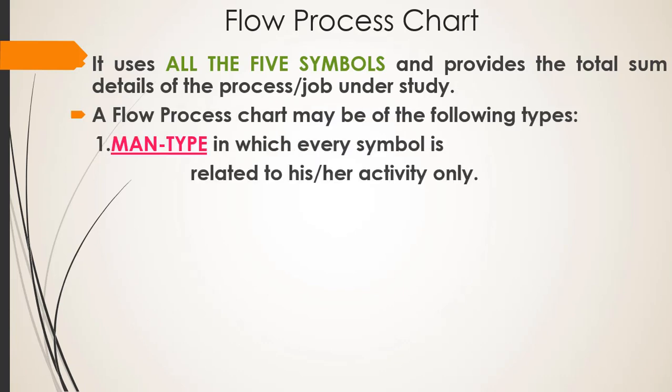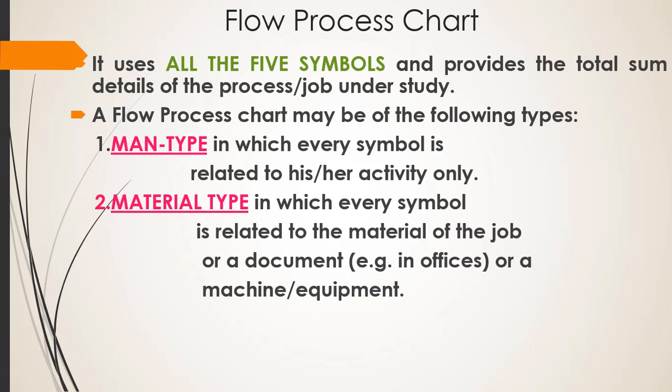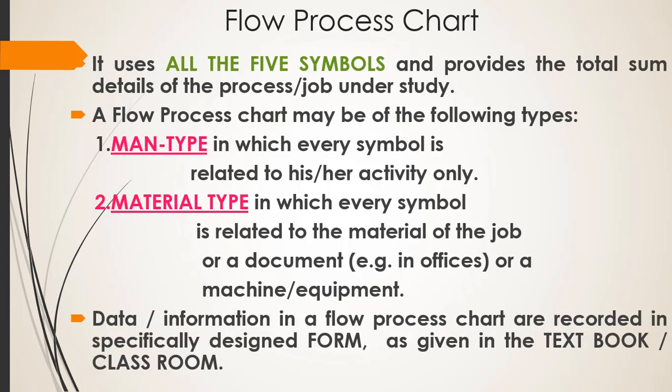Flow process chart is of two main types: man type and material type. In man type flow process chart, movement of worker or labor is shown in the chart. In material type flow process chart, movement of material or equipment is described in the chart. We are going to learn how flow process chart is drawn using a template.